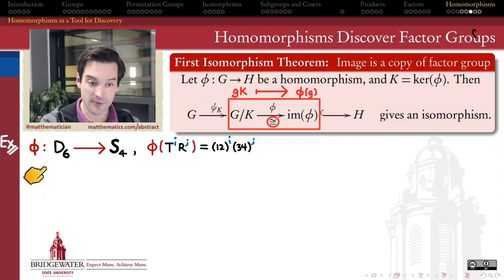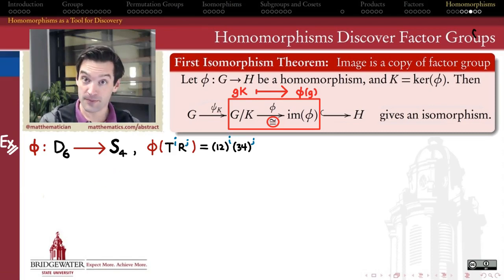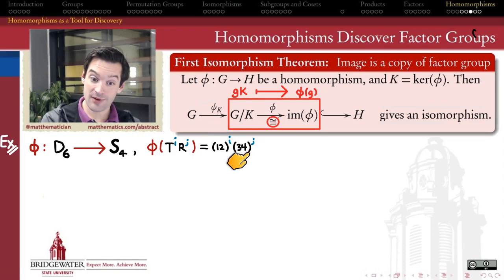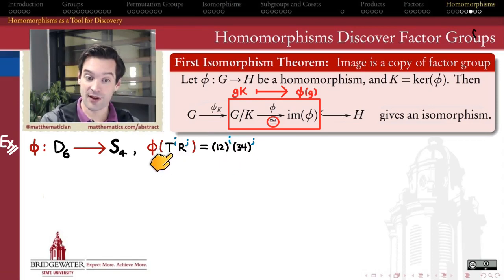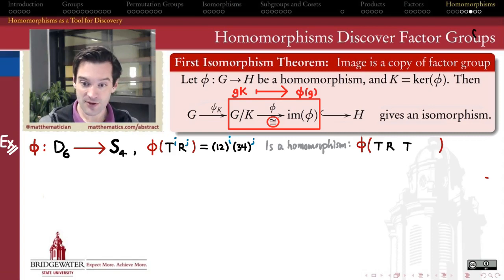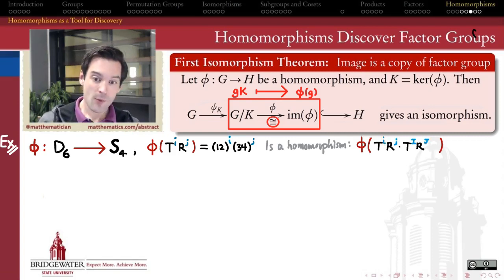Let's look at the following function from the dihedral group of the hexagon D6 into the symmetric group on four symbols S4, defined by sending the i-th power of t composed with the j-th power of r into the composition of the transposition (1 2) to the i-th power and (3 4) to the j-th power. So why should you believe that phi is a homomorphism? It's a valid question we should check every time — why does it respect the structure in these two groups?